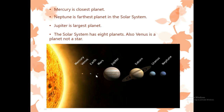This is the sun. The closest planet is Mercury, then Venus, Earth, Mars, Jupiter — and Jupiter is the largest planet — then Saturn, Uranus, and Neptune.